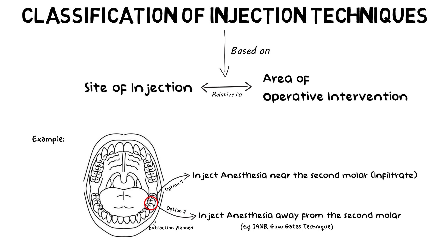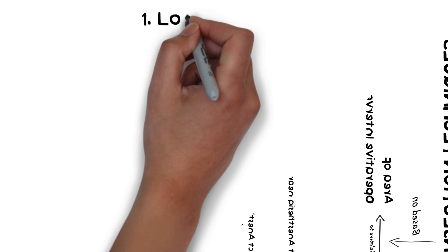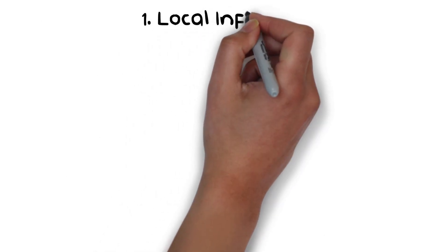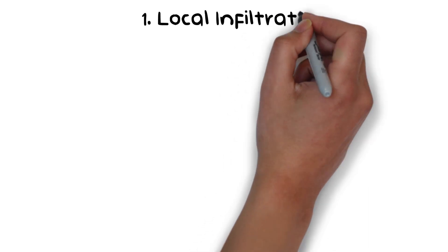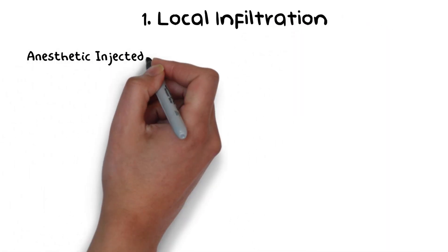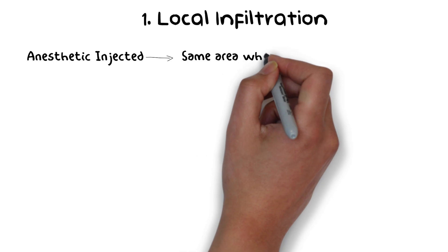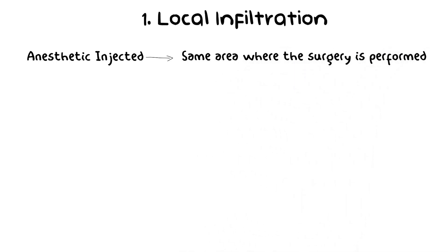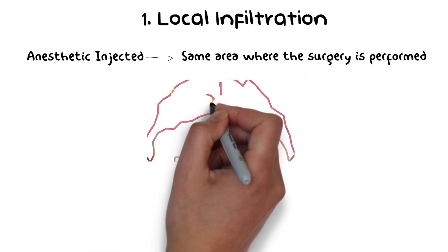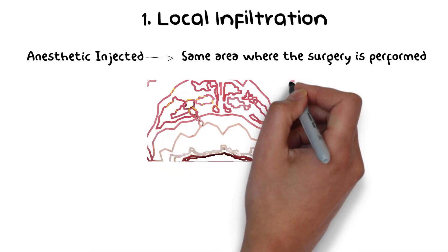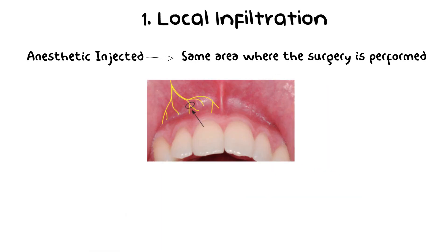The first type of local anesthetic injection technique is termed local infiltration. In this technique, we inject the local anesthetic at the same area where we will perform the surgery or treatment. Small nerve endings near the treatment area, or those supplying the tooth, are flooded with the local anesthetic solution.